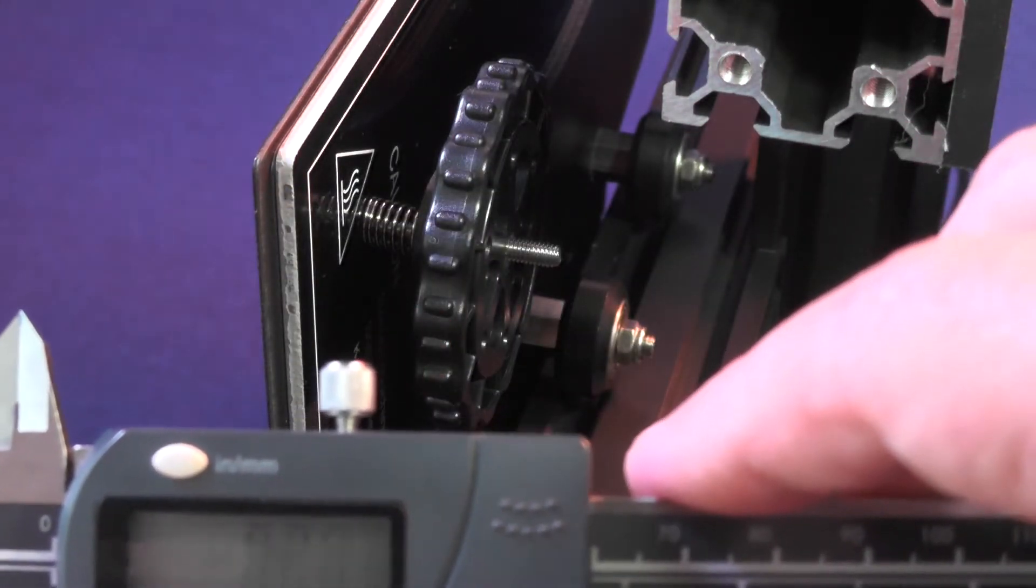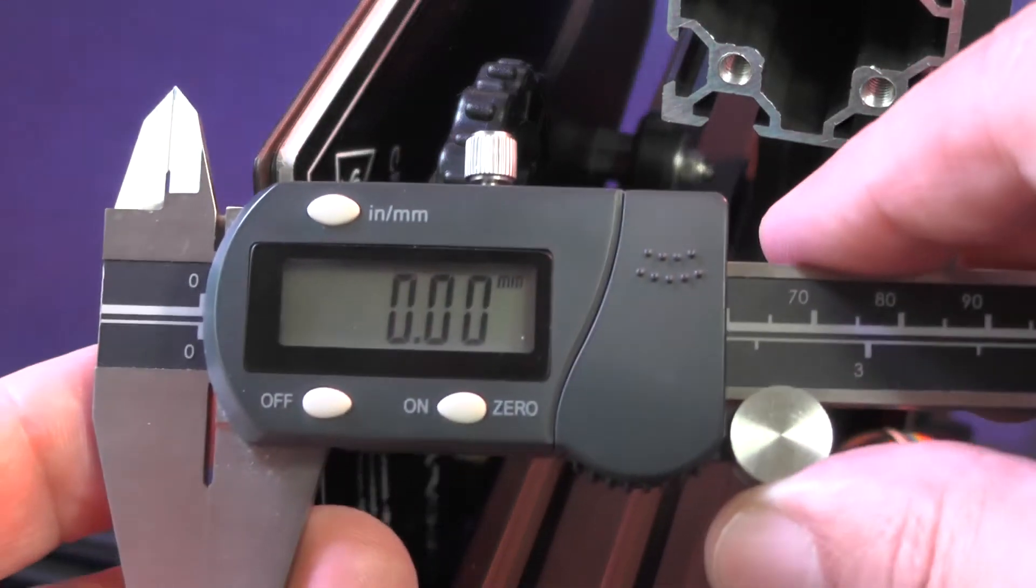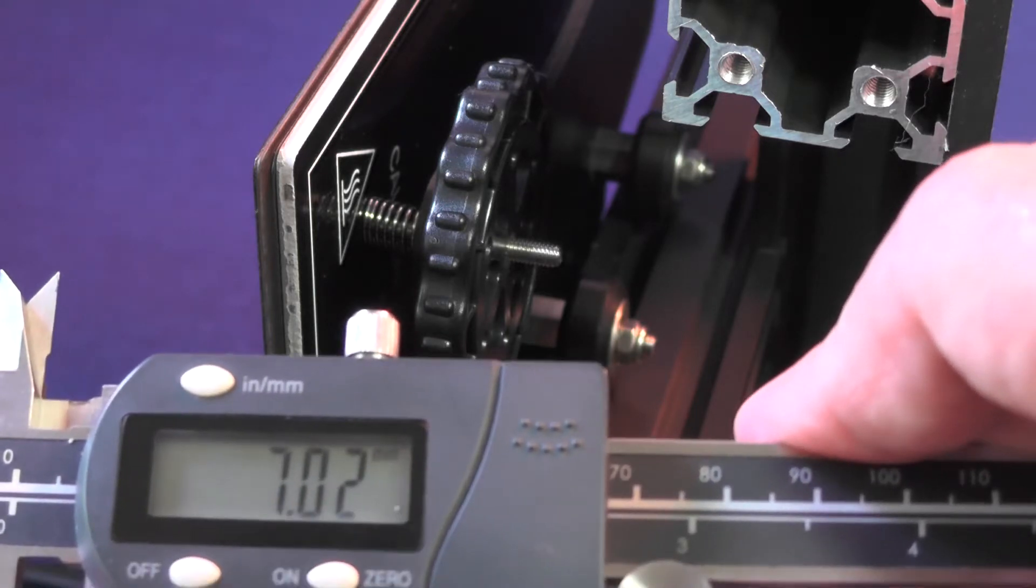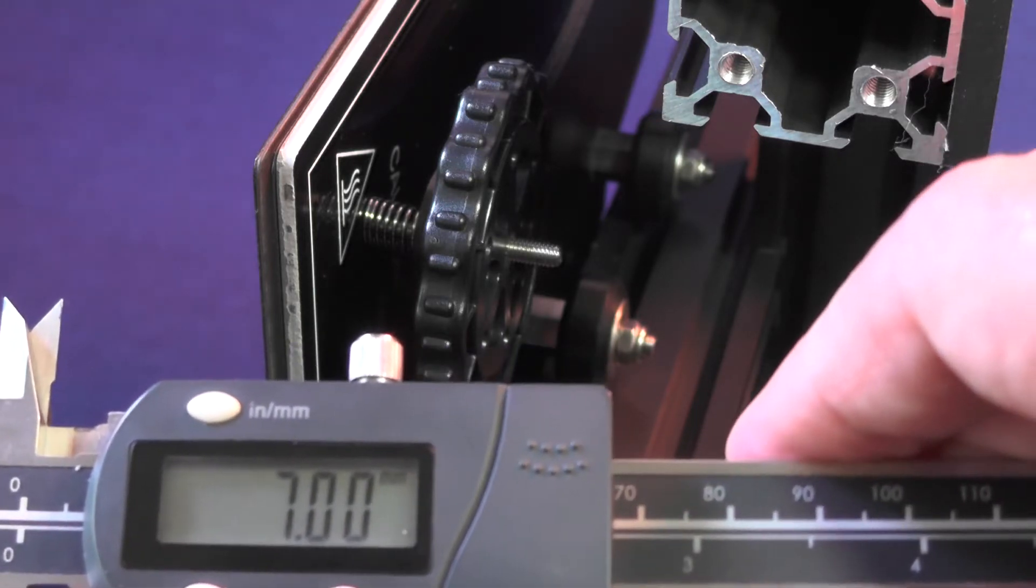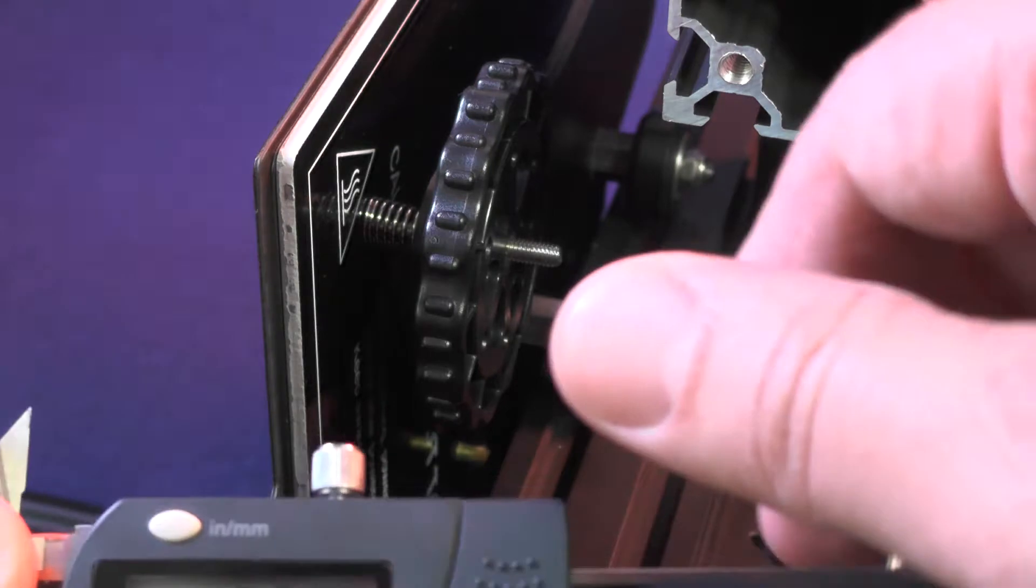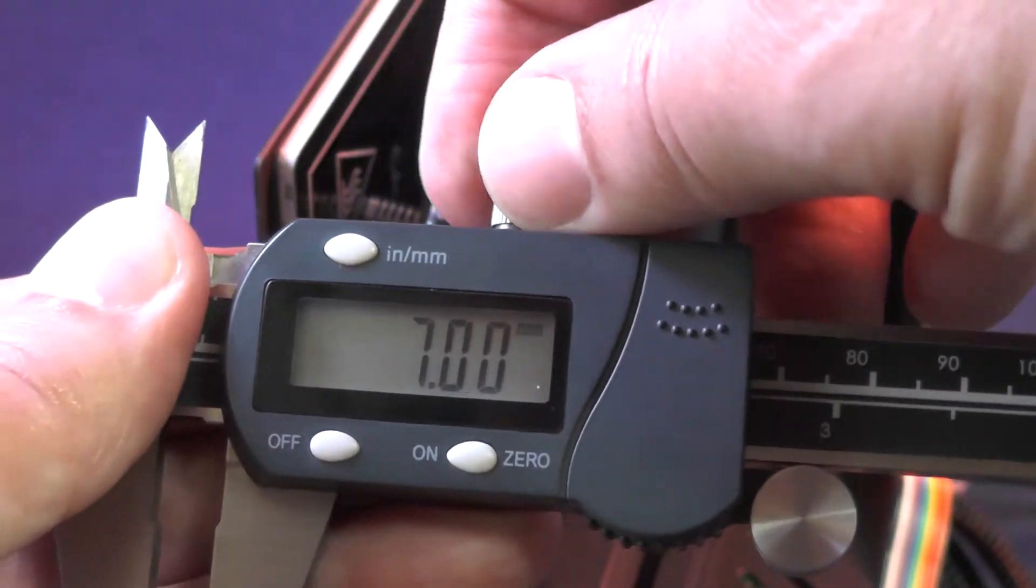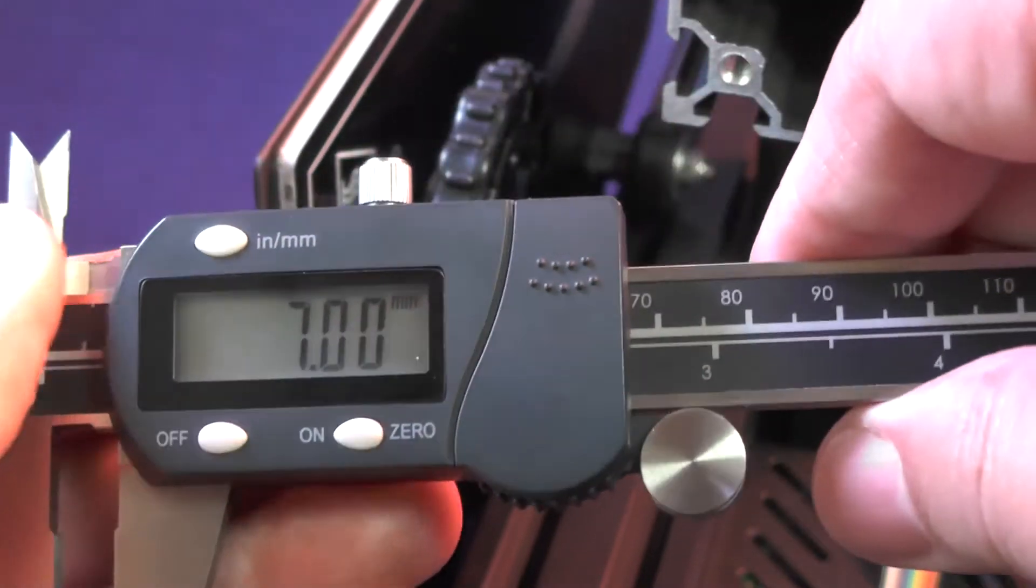We should turn the caliper on and zero it if it is not zeroed out. Make sure that it is set to millimeters and not to inches. And you start rolling the caliper until you reach 7 millimeters. Now you turn this little screw here on the top and that will lock the caliper at its current position.